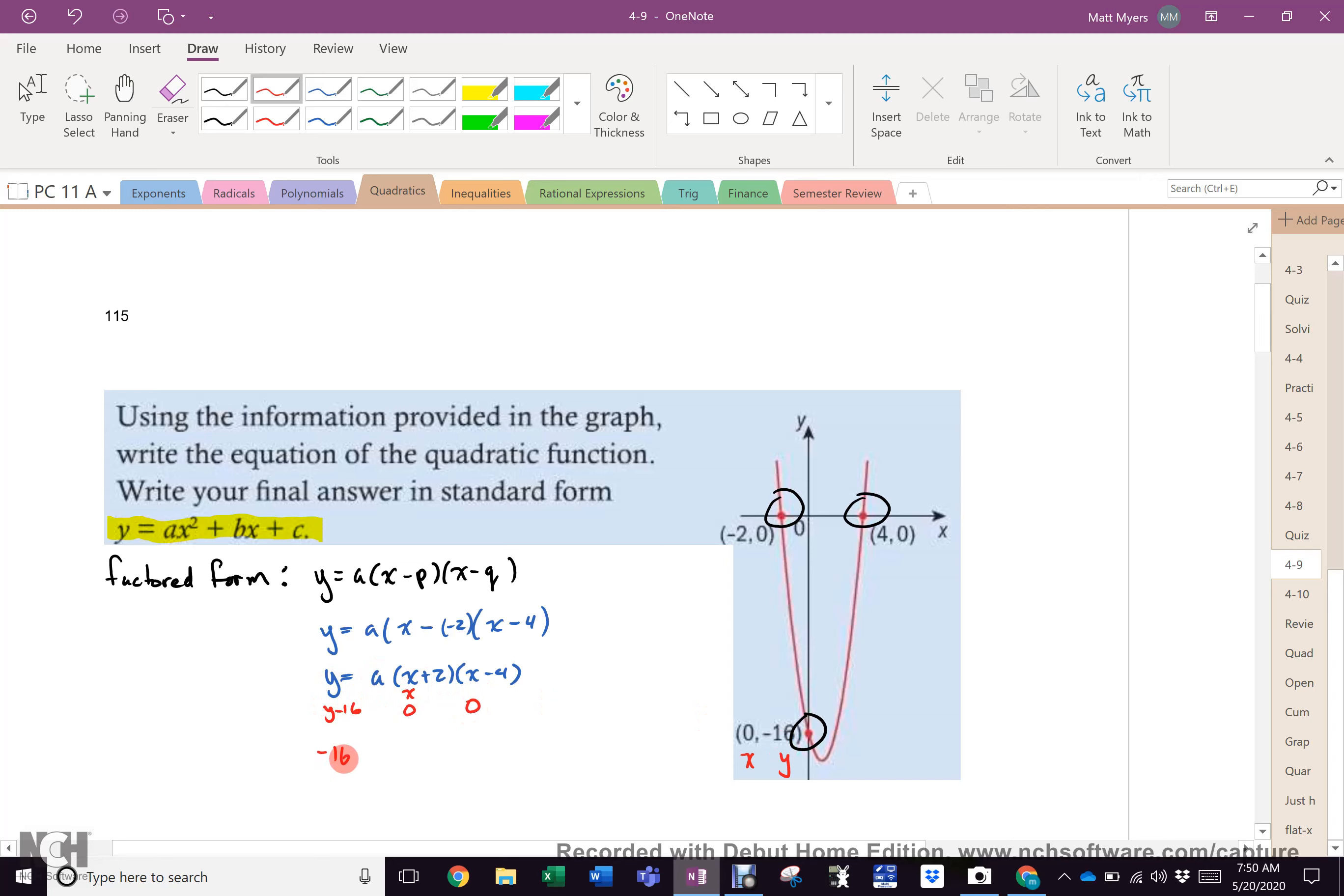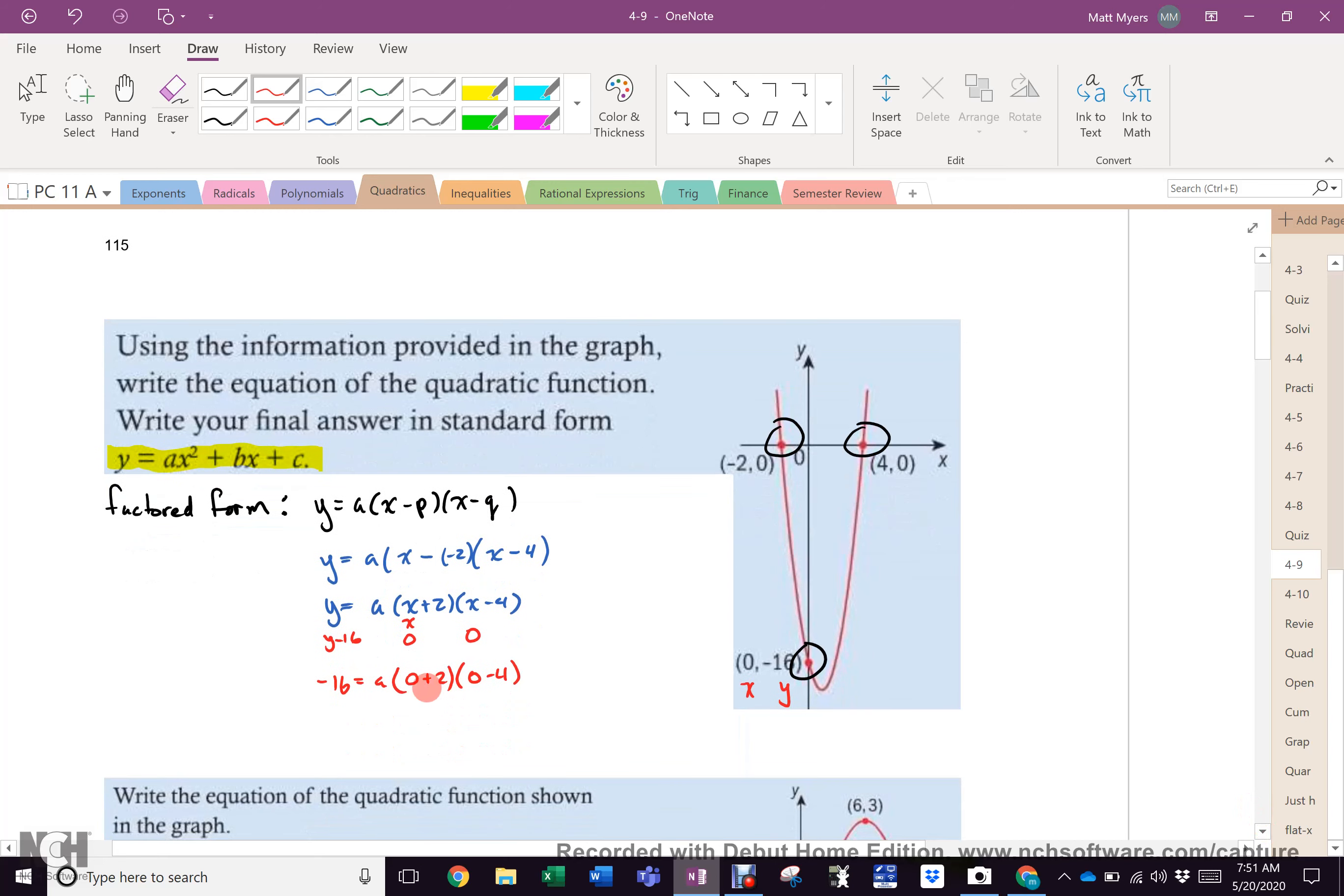So, I have -16 equals a(0 + 2)(0 - 4). So then, -16 equals a(2)(-4), -16 equals -8a. So, a equals 2. Now, once I have a equals 2, I now know that that can go in right there.